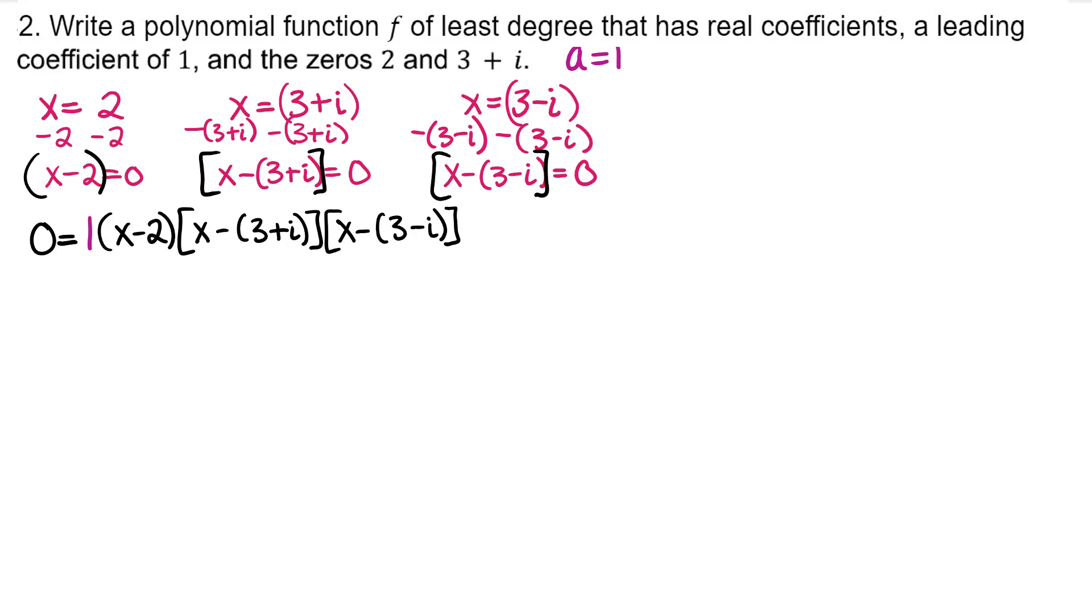Remember your leading coefficient is 1. It's time to distribute these negative ones so we can regroup and use difference of perfect squares. Now we'll group the x minus 3 and the x minus 3 to show that we have the same first term in each of these bigger groups.